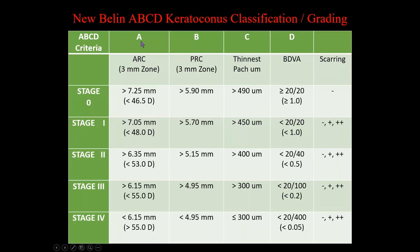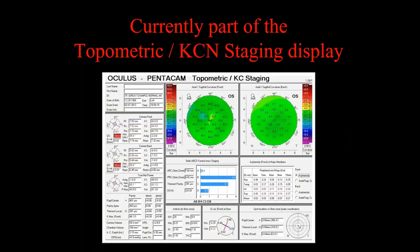To summarize: A stands for anterior radius of curvature taken from the 3mm zone at the thinnest point; B is back or posterior radius of curvature; C is corneal thinnest point pachymetry; and D is distance visual acuity — which the operator must enter, as the Pentacam doesn't measure it. We have stages zero through four. This is all done automatically and is currently part of the topometric keratoconus staging display.